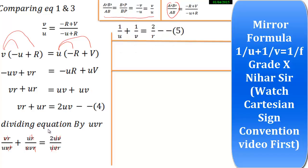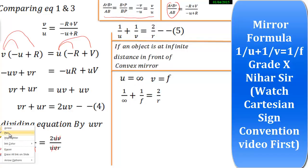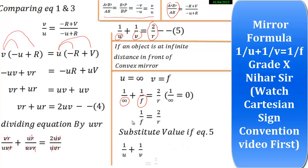Now, if I place an object in front of a convex mirror at infinity, then u equals infinity and v equals f, because the image will be formed at F. Substituting: 1 upon infinity is 0, so 1 upon f equals 2 upon R. Substituting this back into our equation, instead of 2 upon R I write 1 upon f, and the mirror formula is derived: 1/v + 1/u = 1/f.